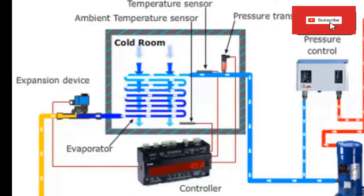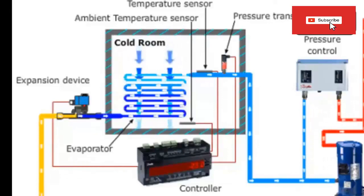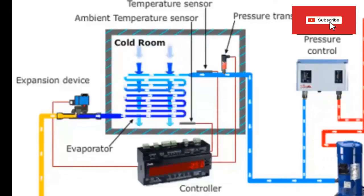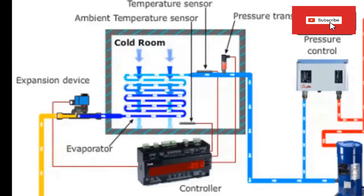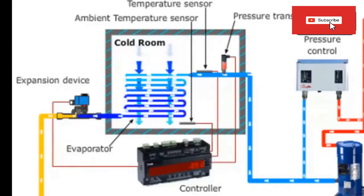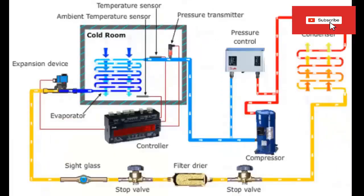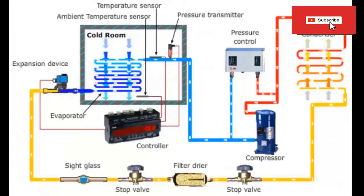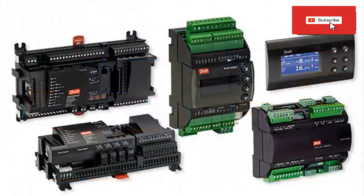The electronic controller allows managing the variables present in the cold room, such as temperature, air speed, humidity, etc. In addition, the controller allows turning the equipment on and off at the time it is needed.